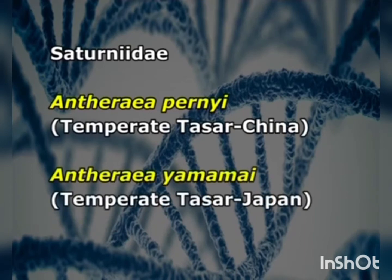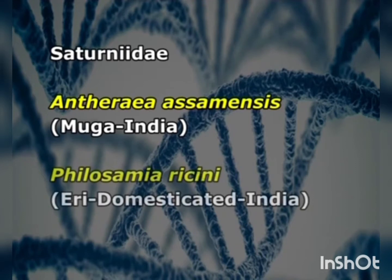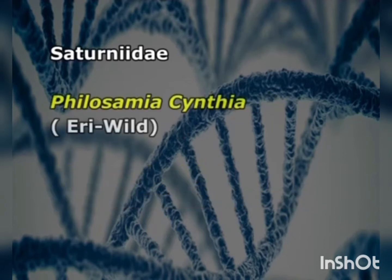Antheraea yamamai, the temperate tasar silkworm of Japan, Antheraea assamensis, the muga silkworm, and Philosamia ricini, the eri silkworm which is also a domesticated silkworm in India, are also included. Philosamia cynthia is an eri wild silkworm found in the family Saturniidae.